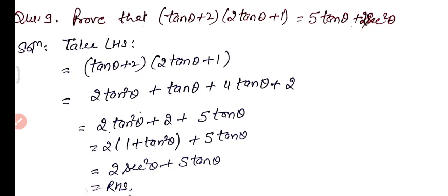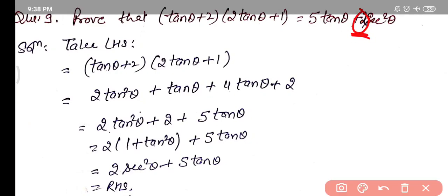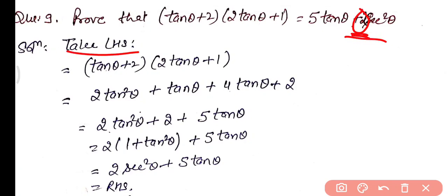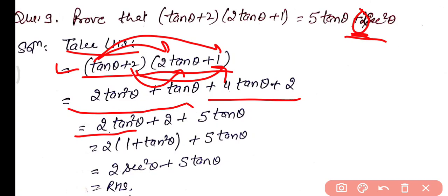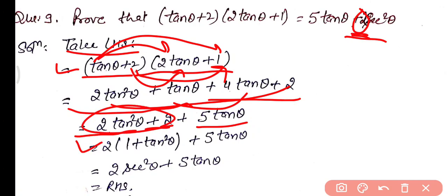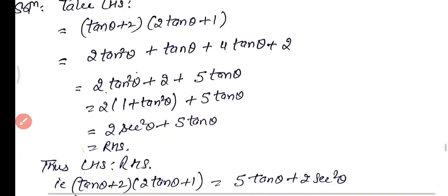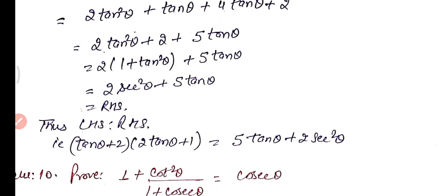Question 9: Prove that (tan θ + 2)(2tan θ + 1) = 5tan θ + 2sec²θ. Taking the left-hand side and expanding: 2tan²θ + tan θ + 4tan θ + 2 = 2tan²θ + 5tan θ + 2. Taking 2 common from the first and last terms: 2(1 + tan²θ) + 5tan θ = 2sec²θ + 5tan θ, which equals the right-hand side. Hence proved.